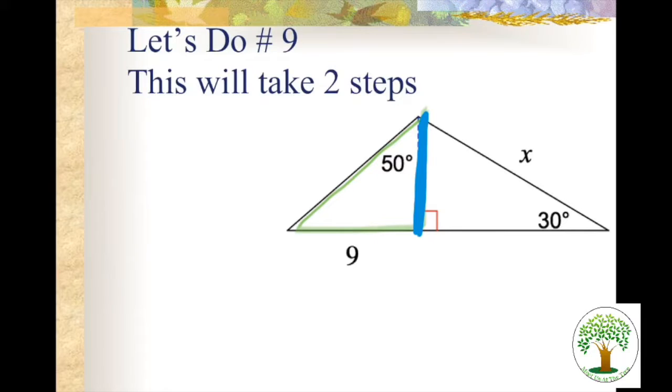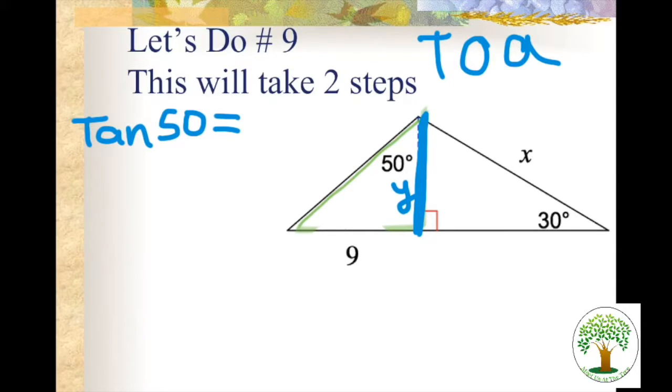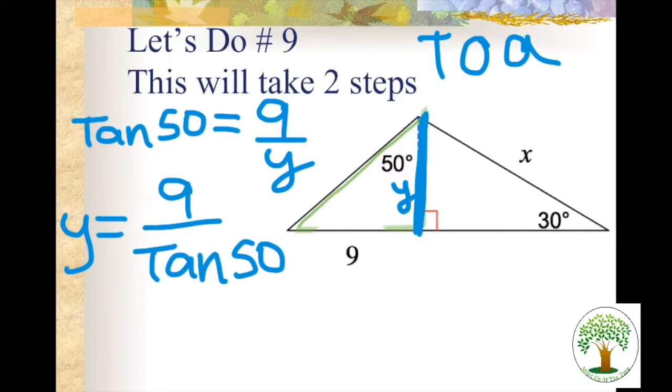This is not one of those ones that we had before where we had an altitude to a right triangle where we can use the geometric mean. We have to find x, but it might be difficult because we don't know anything about this triangle at all. But it is attached to this triangle over here. We do know that this is a 30-60-90 triangle, and if we can find this side here, we can multiply by 2 to get that one. How can we find this angle using sine, cosine, or tangent? If we're looking at this triangle, is this blue side opposite or adjacent or the hypotenuse to the 50? I heard opposite and adjacent. Which is it? It's adjacent. And we know this one, which is the opposite. Which one is opposite and adjacent? Tangent.